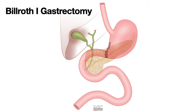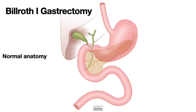Let us start with normal anatomy. You have the esophagus, stomach, antrum, duodenum, pancreas, bile duct, and pancreatic duct.